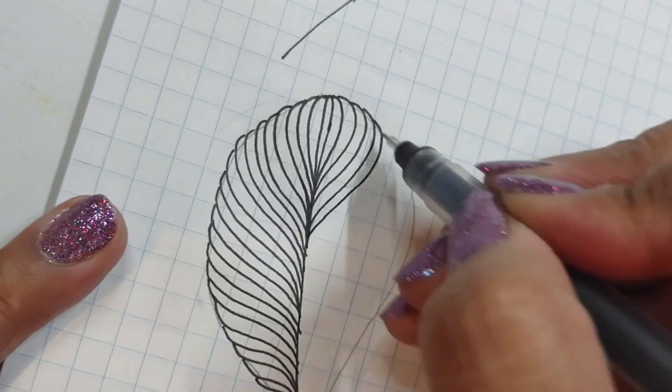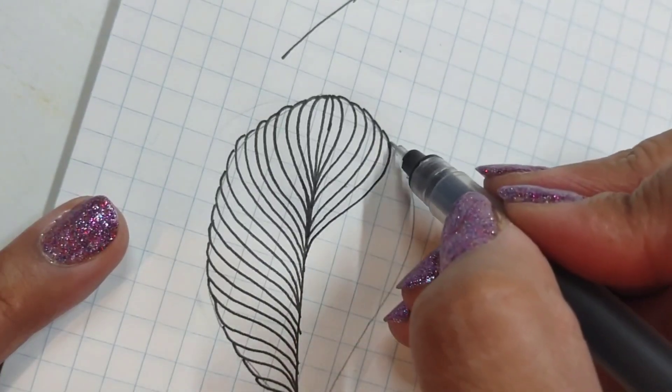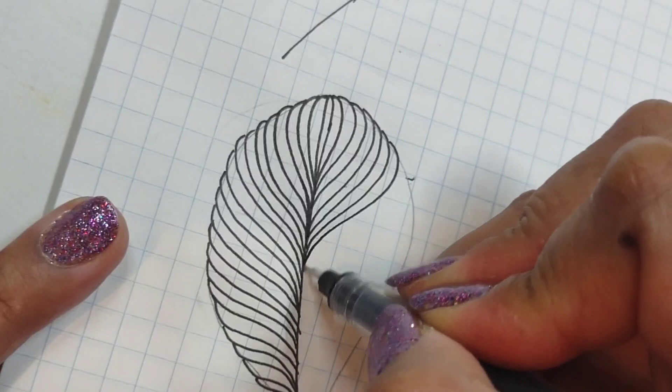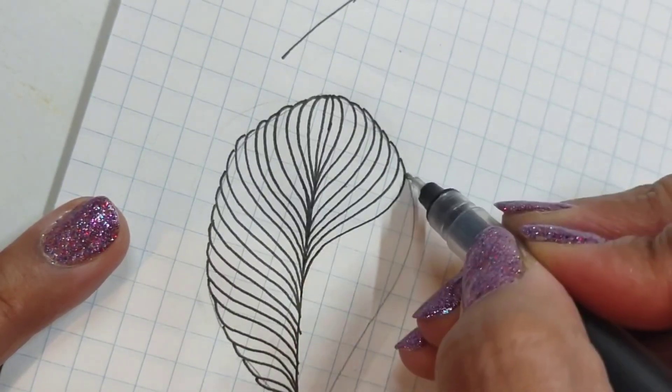But I suppose backwards, so a backwards S. I'm doing my best to let this curve nicely and hug that inner line.